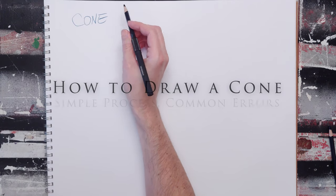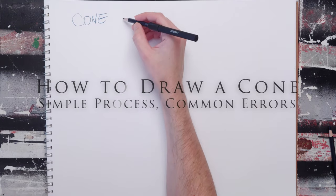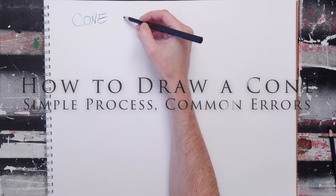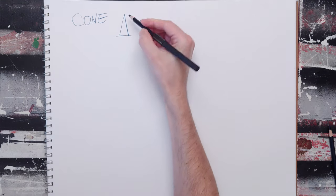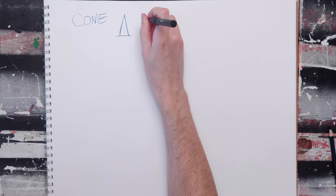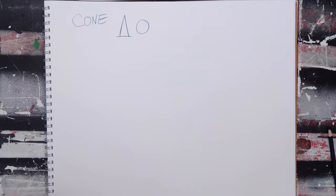This video will be about the basics of drawing the cone. The cone is basically made up of a triangle and a circle.